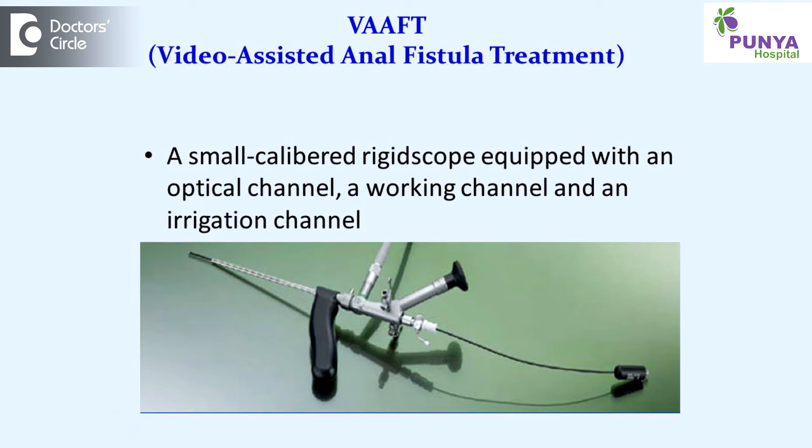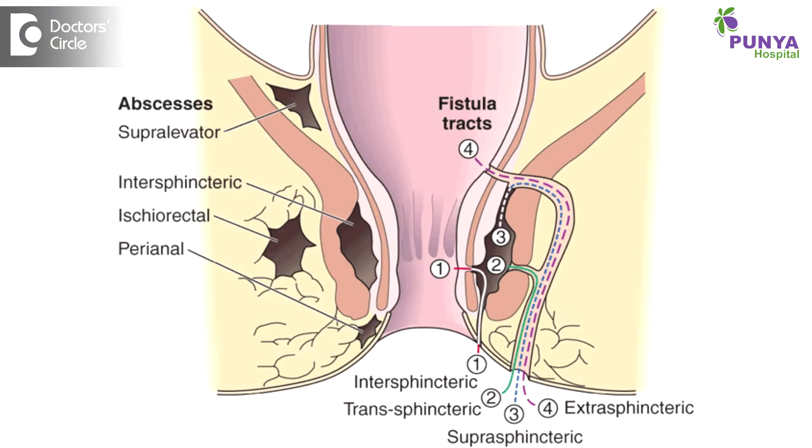VAFT: visually assisted fistula tract ablation. In this procedure, we insert into the fistula with the help of an irrigation material to expand it, and try to visualize the fistula — even if it is complex, has a diversion, or multiple branches. All branches can be easily approached, and from inside we try to ablate the fistula tract.